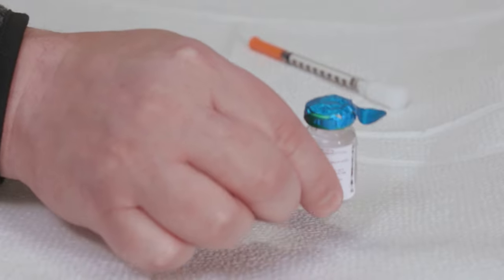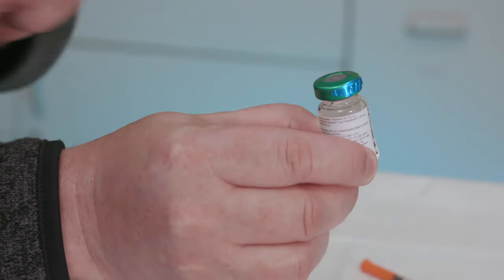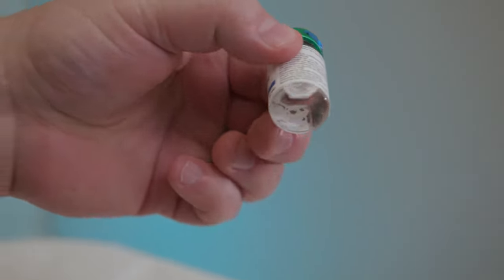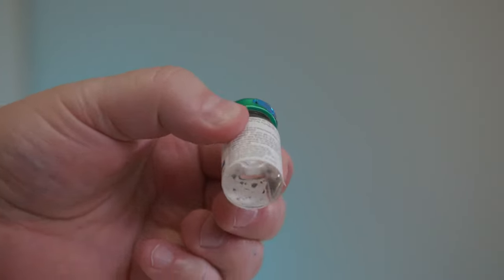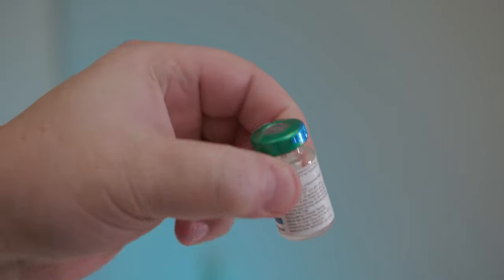If you're using the vial for the first time, take off the cap and throw it away. Be sure to check the medication in the vial. Don't use it if there is anything floating in it, if it's cloudy, or if the rubber stopper comes off the vial.